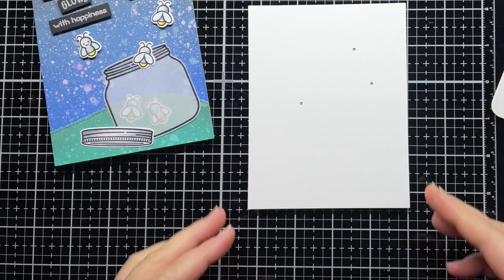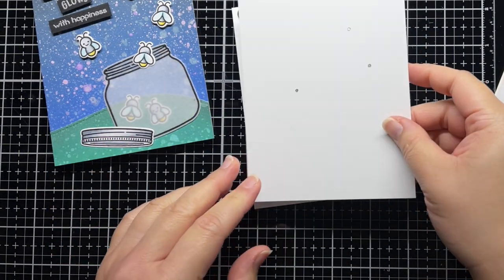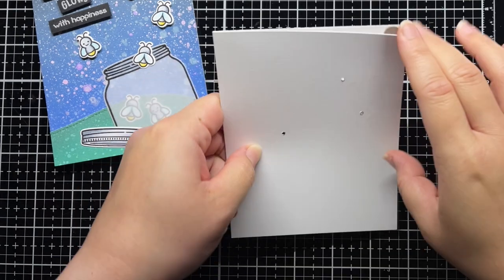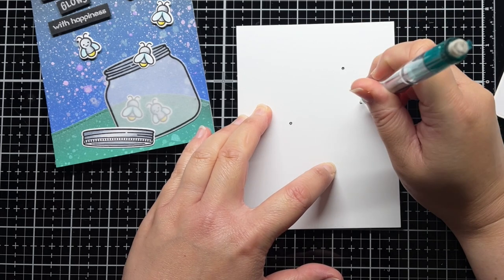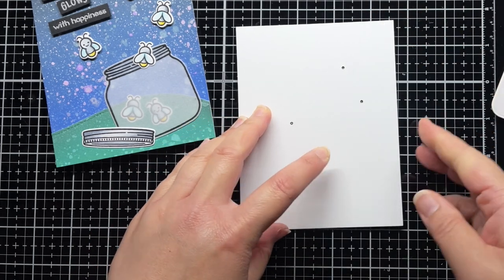If you missed the intro video in this series, you can find a link above or in the YouTube description below. To start, I used the template I created in the first video to trace the holes of my card panel onto an A2 panel of white cardstock.